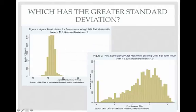Figure 1 shows the age at matriculation for freshmen entering UNM between fall 1994 and 1999. Yes, this is from that old project. So it's the age that people came into UNM over that time period. The mean is 18.5 and the standard deviation is 0.5.